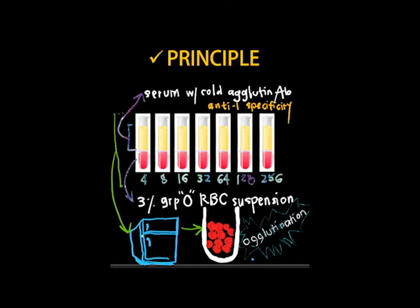When serial dilutions of serum containing a cold agglutinin with anti-I specificity are mixed with 3% group O adult red cells and refrigerated, a positive reaction of agglutination will occur in those tubes containing sufficient antibody. The endpoint is determined as the last tube demonstrating agglutination, and the reciprocal of the dilution is reported as the titer.